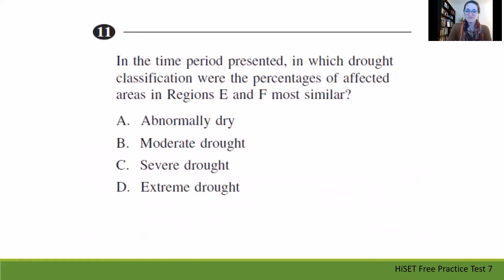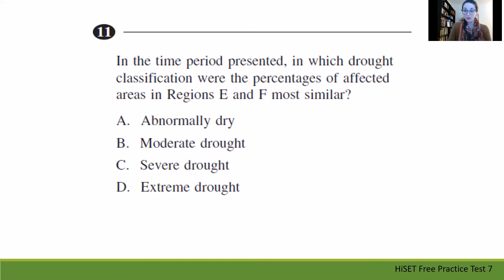Let's take a look at this question. It says: in the time period presented, in which drought classification were the percentages of affected areas in regions E and F the most similar? Our options are some of the categories listed along the top of the table: abnormally dry, moderate drought, severe drought, or extreme drought. It's good to look at the answers ahead of time because this gives us a more limited focus. We're looking for which classification has the most similarity between the two regions.